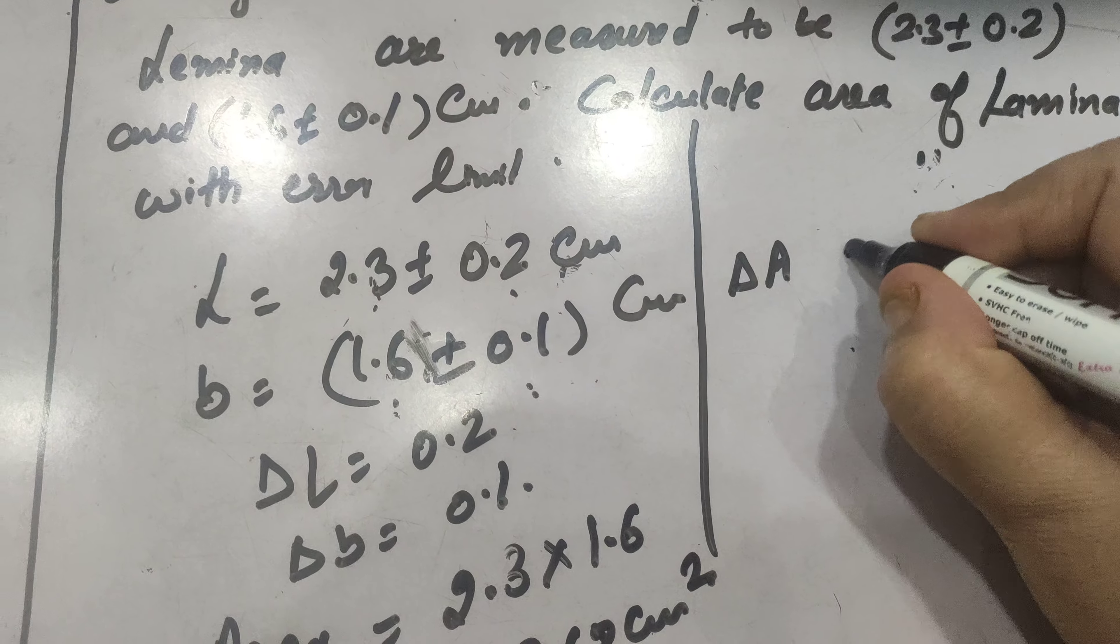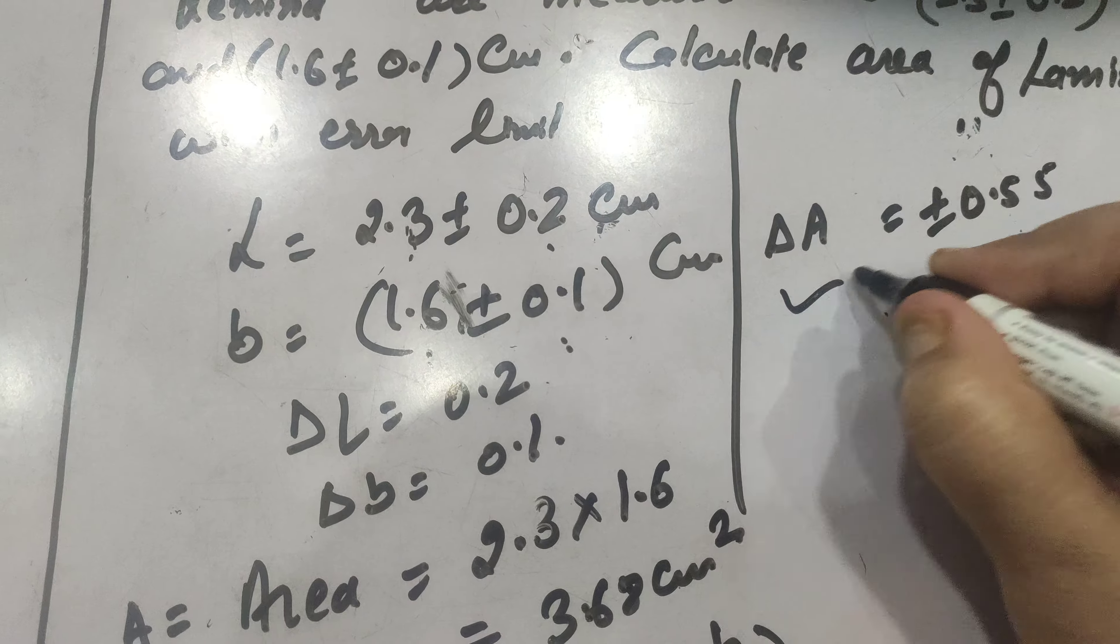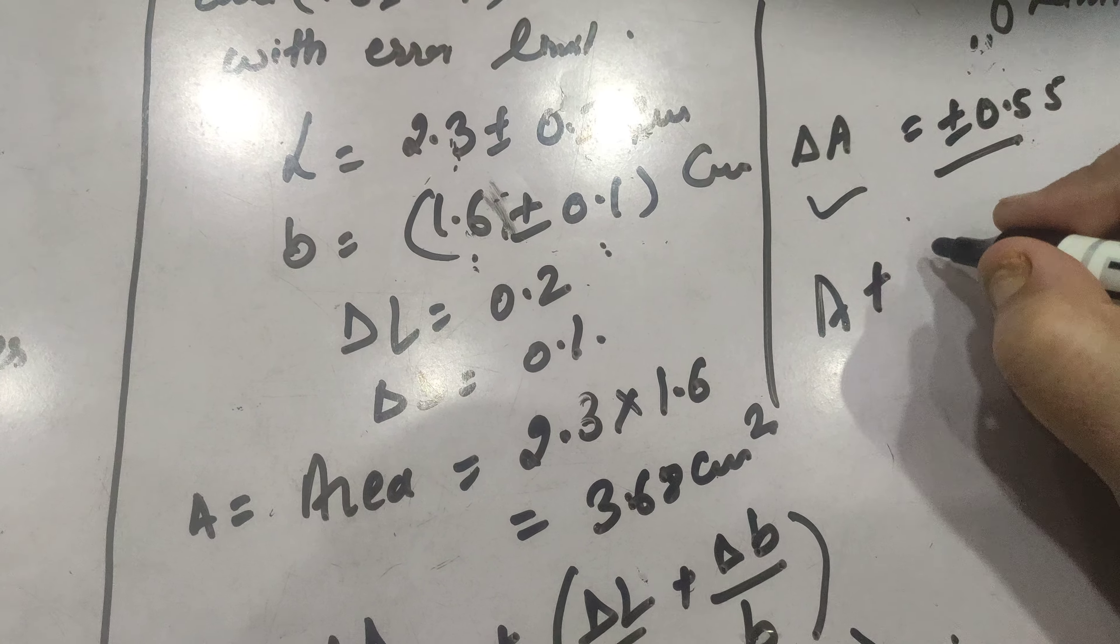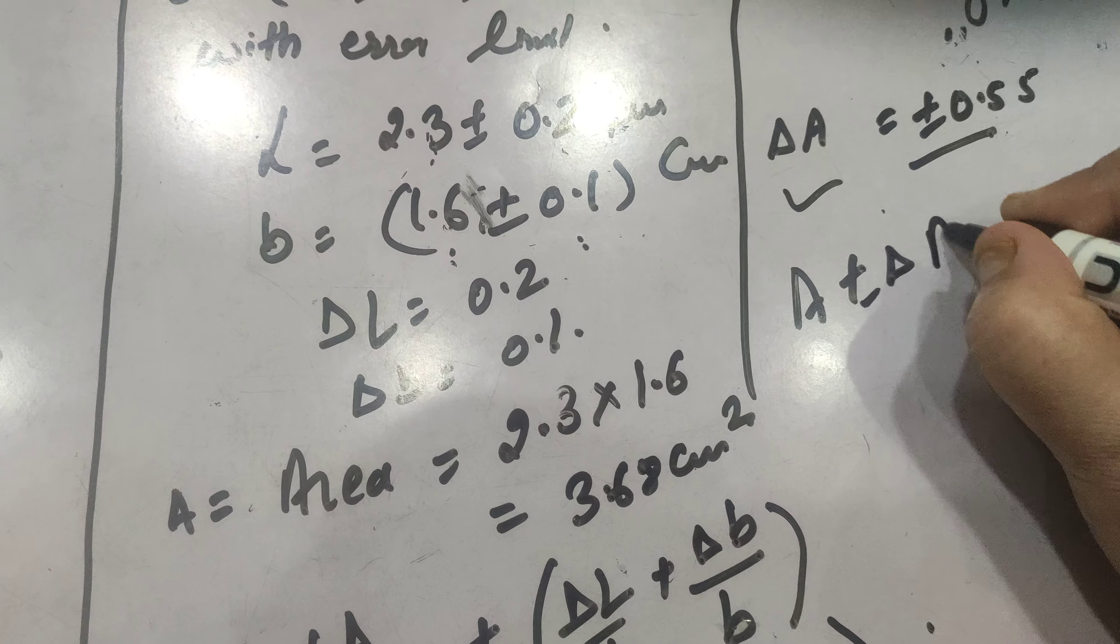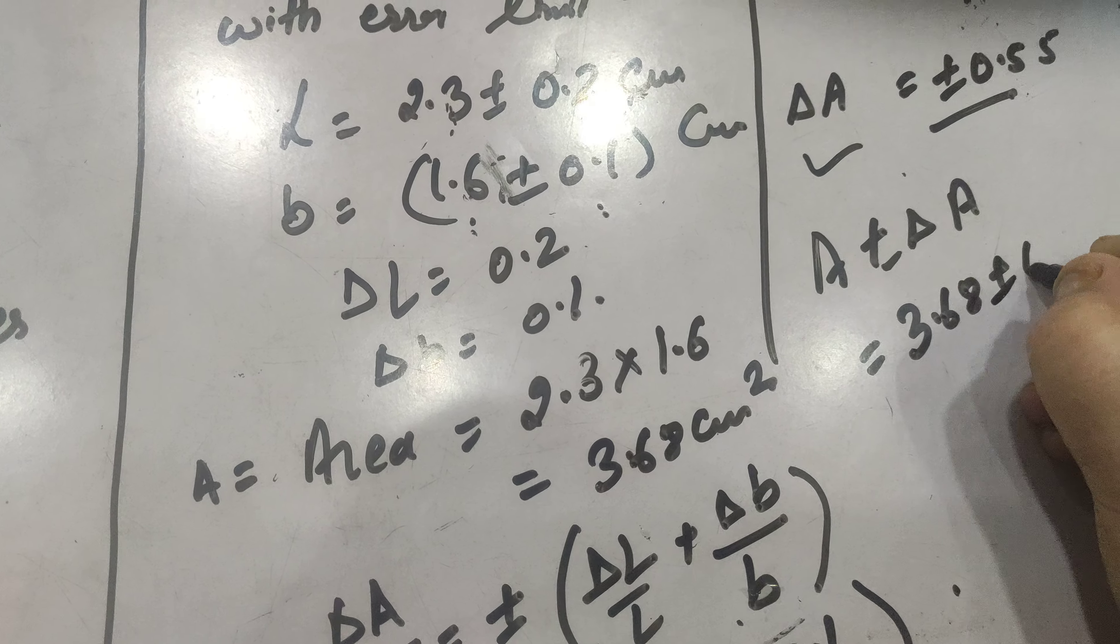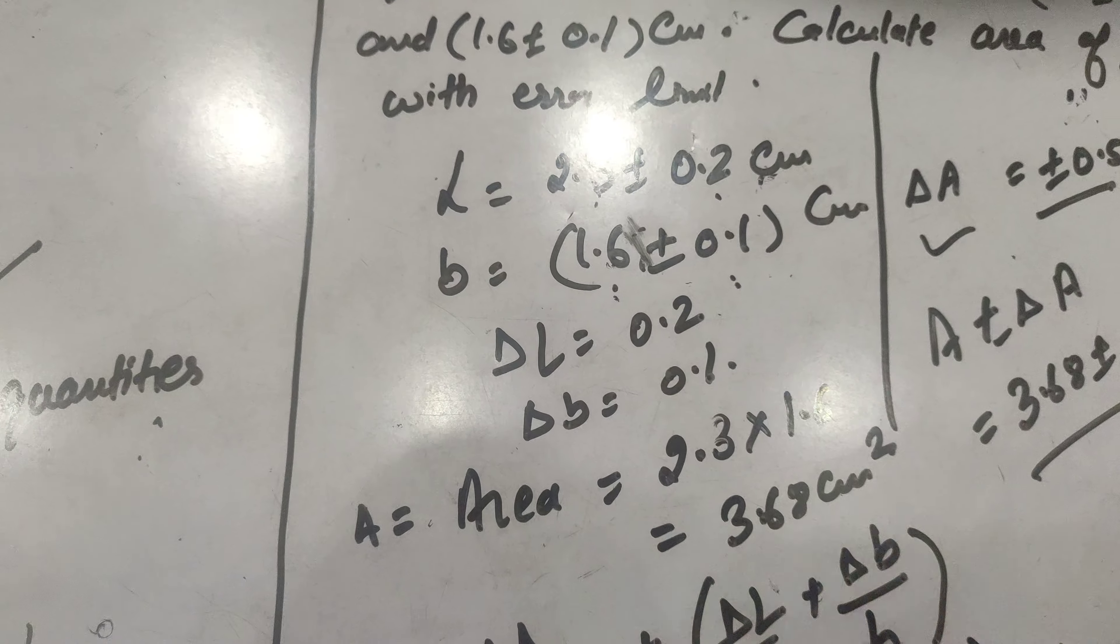By calculating, delta A is calculated as plus minus 0.55. So delta A we have calculated and we can write the result as A plus minus delta A. A we have calculated 3.68 plus minus 0.55 and this is how we have used the formula for product.